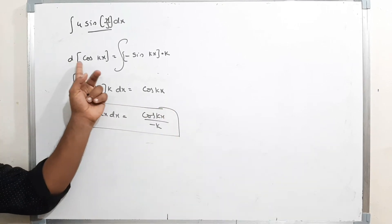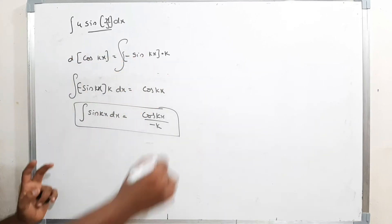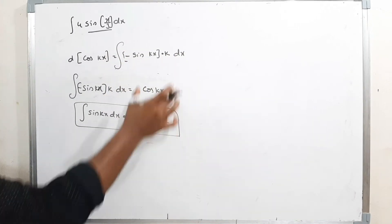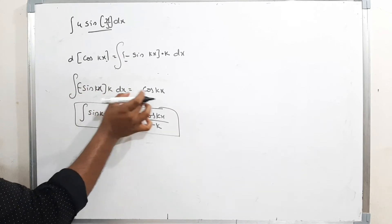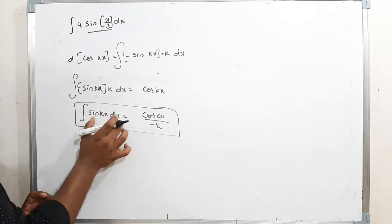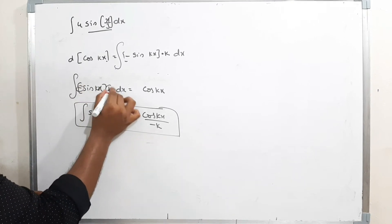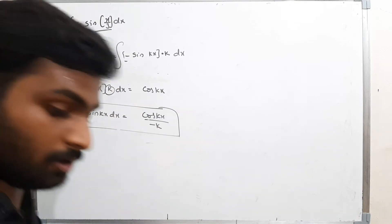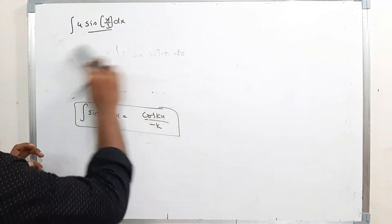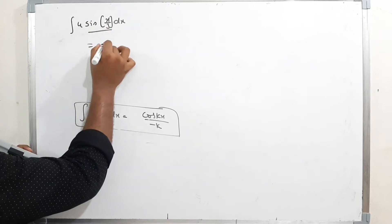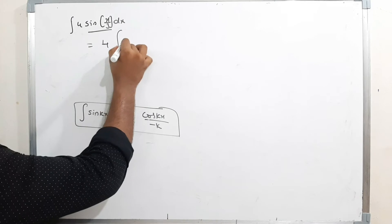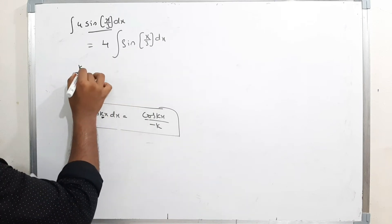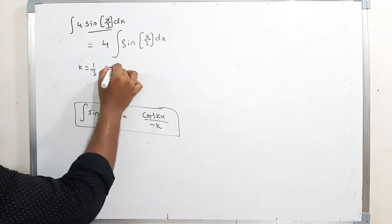Observe carefully: the differentiation of cos(kx) is -sin(kx) times k. Doing integration on both sides gives cos(kx). So the integration of sin(kx) dx is cos(kx)/(-k). Here k is 1/3, so the integration of sin(x/3) is cos(x/3) divided by (-1/3).